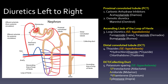And then the last group is at the DCT or collecting duct — these are the potassium-sparing drugs, group five. They're towards the end of the distal convoluted tubule, and they cause hyperkalemia. So later we'll see that we can pair these together — the hypokalemic drugs from the middle with the hyperkalemic drugs at the end.